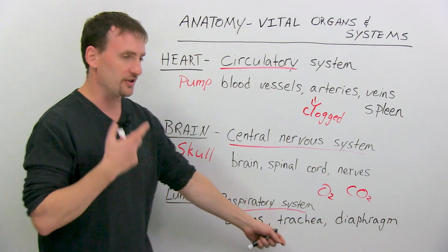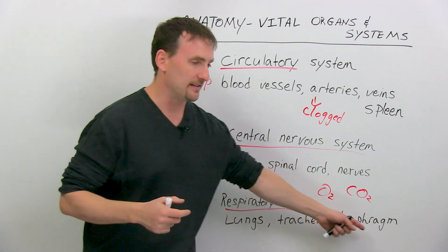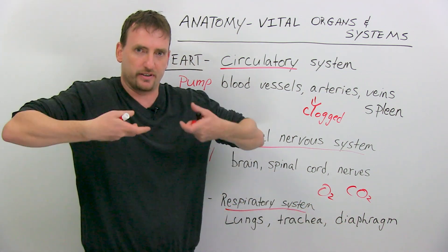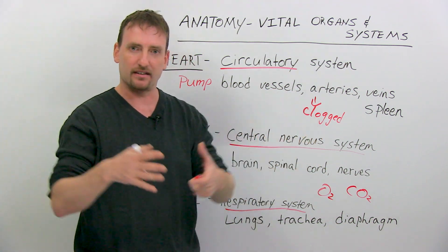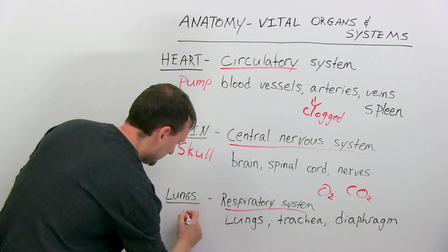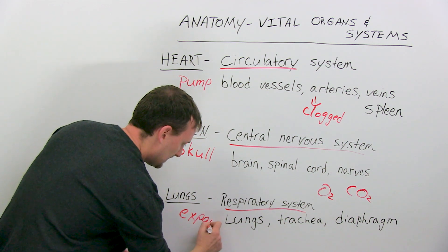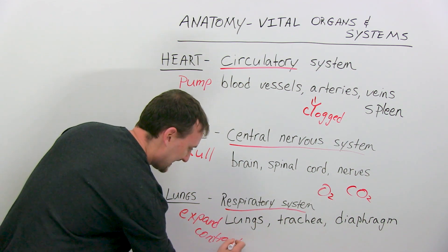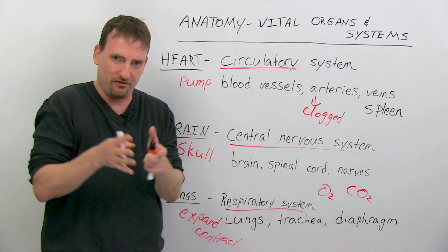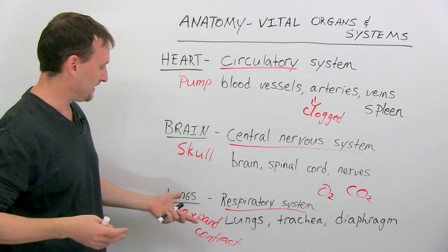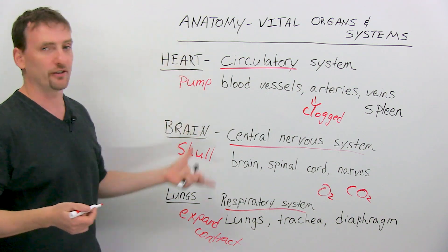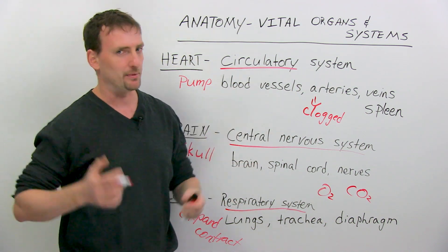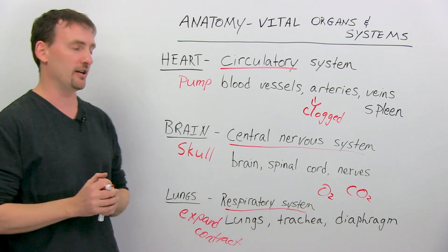Made up of the lungs, the trachea is in here, and the diaphragm basically underneath pushes up and down to help the lungs expand or contract. I hope you can see that. Expand, contract. Expand, contract. So these are your lungs. So these are three of the five. Let's look at the other two that some people don't necessarily think about regularly.